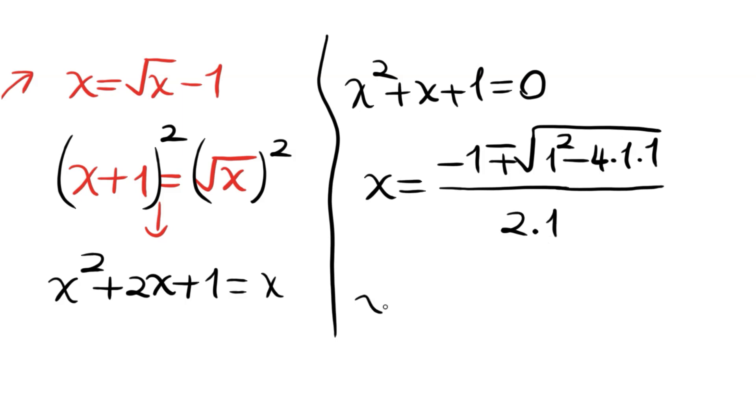This gives complex solutions. x = (-1 ± √(-3))/2. We can write that as (-1 ± √3i)/2.